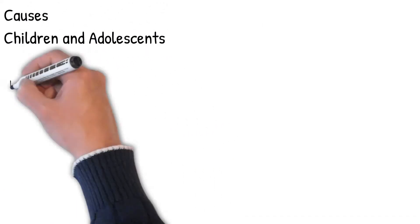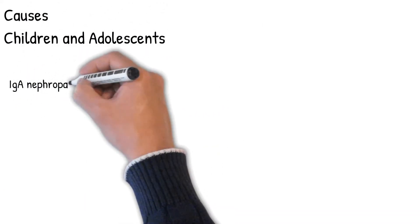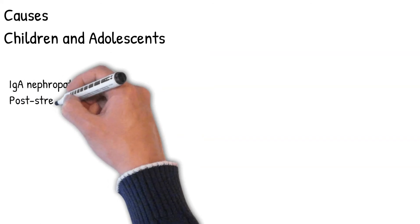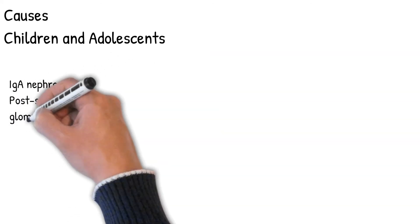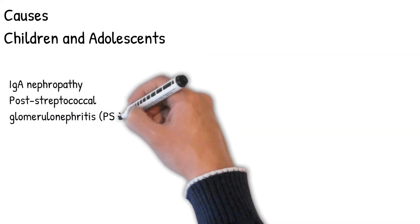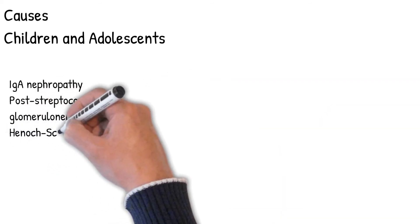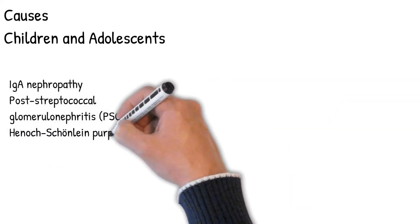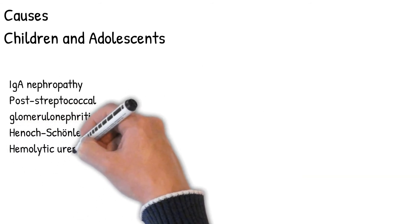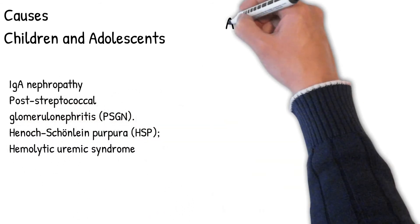Causes in children and adolescents: IgA nephropathy in children who recently had an upper respiratory tract infection, post-streptococcal glomerulonephritis (PSGN), Henoch-Schönlein purpura (HSP), and hemolytic uremic syndrome. Most cases occur immediately following infectious diarrhea caused by a specific type of E. coli.